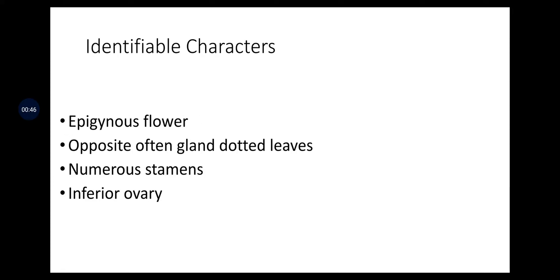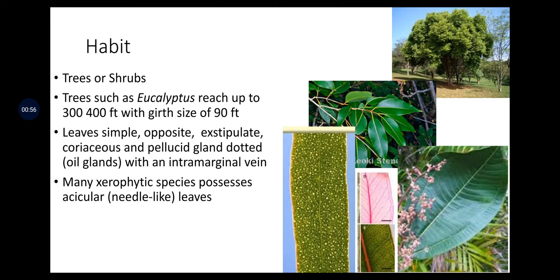Characteristic features of Myrtaceae include epigynous flowers, opposite and often gland-dotted leaves, numerous stamens, and an inferior ovary.